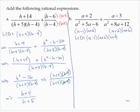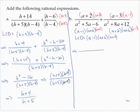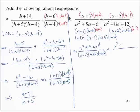Now we build in the appropriate factors. The first denominator has (a − 1) and (a + 6); it needs (a + 2). The second fraction has (a + 2) and (a + 6); it needs (a − 1). So the first fraction becomes (a + 2)(a + 2) = a² + 4a + 4 over the common denominator (a − 1)(a + 6)(a + 2), plus the second fraction with numerator (a − 3)(a − 1) = a² − 4a + 3 over the same denominator.